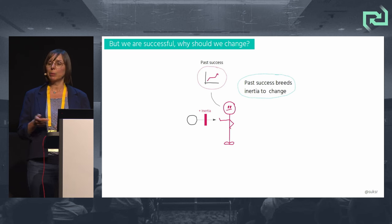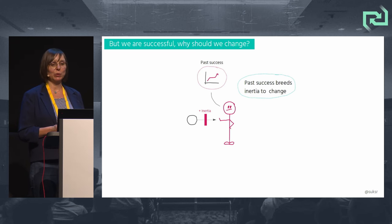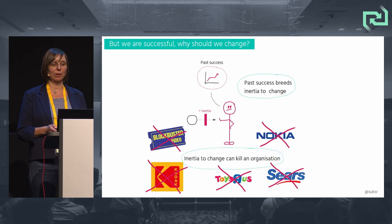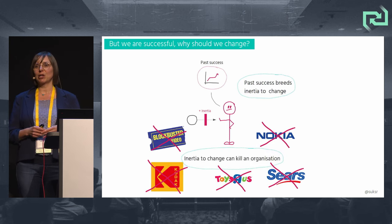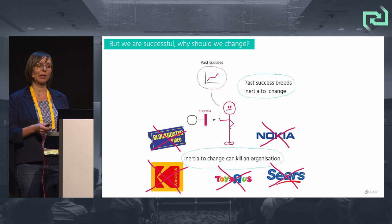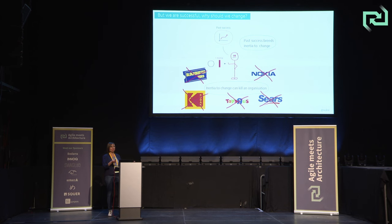Be aware that you might face inertia to change — inertia created by past success that is impeding the evolution of components. It's not the lack of innovation that can kill an organization, but their inertia to change. For example, Nokia was very innovative but was very reluctant to fully transition to the new smartphone era, and within six years their market share dropped by over 90%.